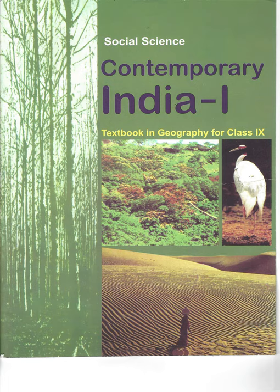The elongated chain of islands located in the Bay of Bengal, extended from north to south, are called the Andaman and Nicobar Islands. They are bigger in size and more numerous and scattered. The entire group of islands is divided into two broad categories: the Andaman in the north and the Nicobar in the south. It is believed that these islands are an elevated portion of submarine mountains. This island group is of great strategic importance to the country. There is a great diversity of flora and fauna in this group of islands too. These islands lie close to the Equator and have thick forest cover.